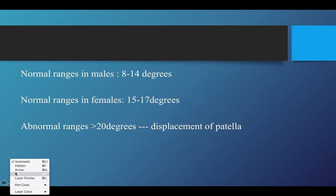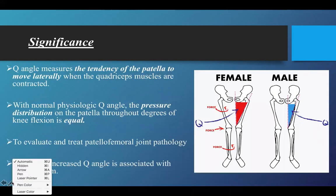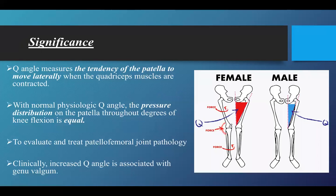Abnormal ranges are anything above 20 degrees. If there is a Q-angle which is greater than 20 degrees, there are chances of displacement or subluxation of the patella, which is usually in the lateral direction. As shown here in the picture, if the quadriceps angle has increased more than 20 degrees, there is a chance of lateral patella subluxation or displacement.